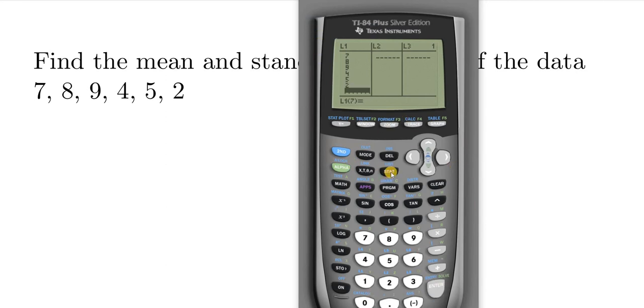And then you hit stat one more time. Then you go over to where it says calc. So you have to hit the right arrow key. And then just select the first thing you see, one variable stats. Hit enter.